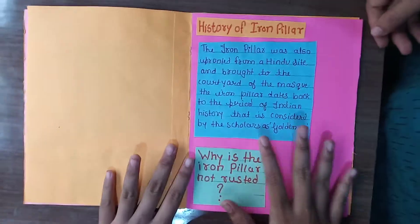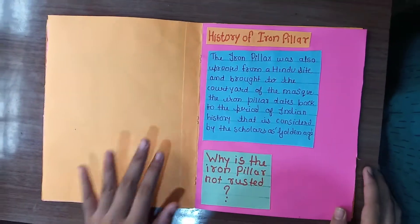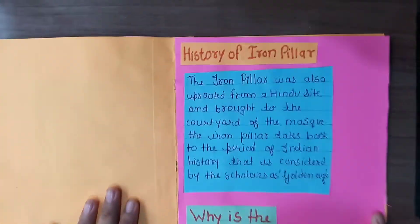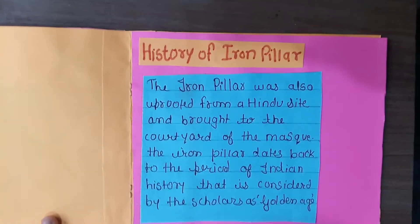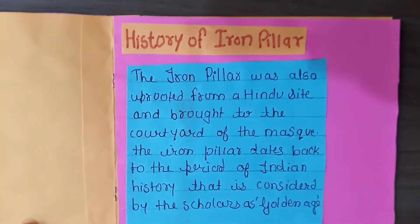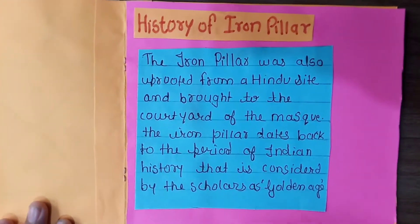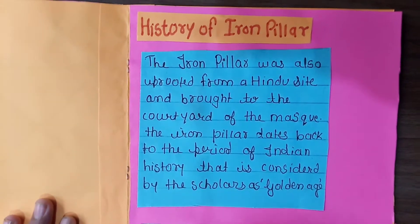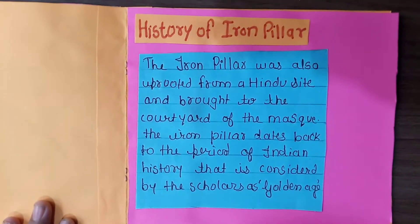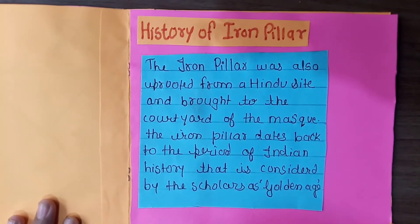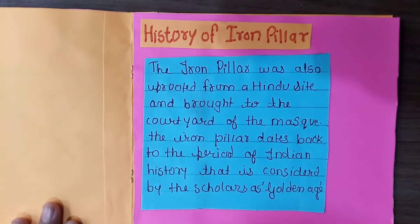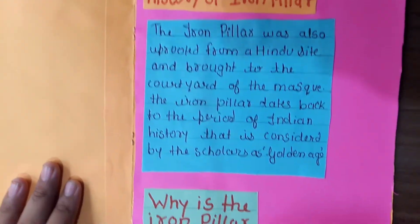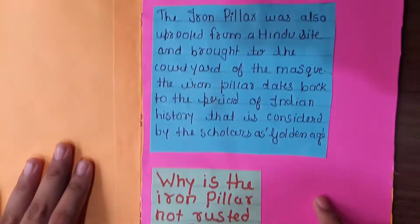Here is the history of the iron pillar. The iron pillar was uprooted from a Hindu site and brought to the courtyard of the mosque. The iron pillar dates back to the period of Indian history considered by scholars as the golden age.